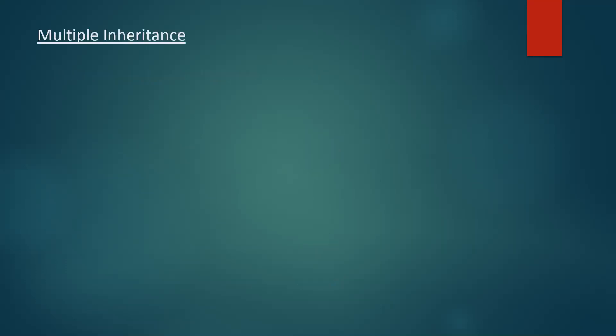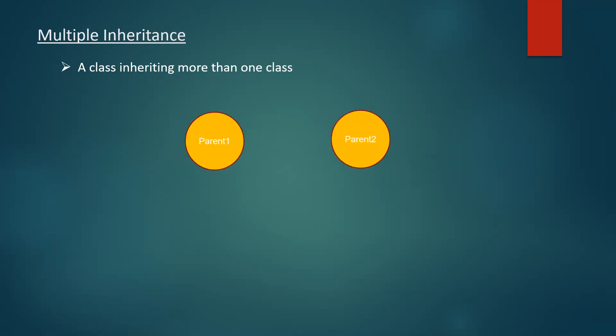Now, what is multiple inheritance? A class inheriting more than one class is what we call multiple inheritance. In this case we will have more than one parent class. There are two parents and one child, and the child will be inheriting the properties of both classes. It can be more than two classes as well.